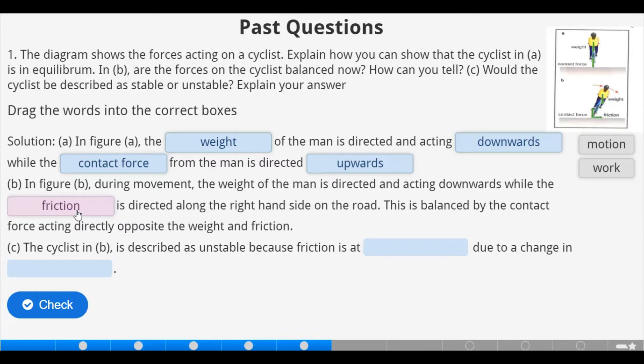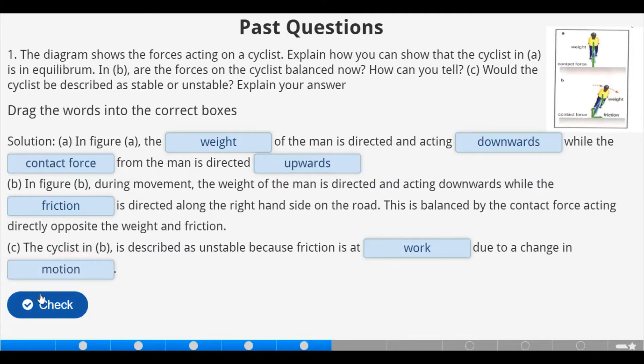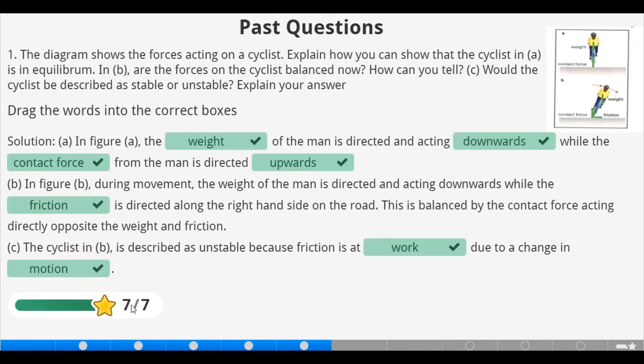This is balanced by the contact force acting directly opposite the weight and the friction. The cyclist in B is described as unstable because the friction is at work due to a change in motion. Can we check? That's correct.